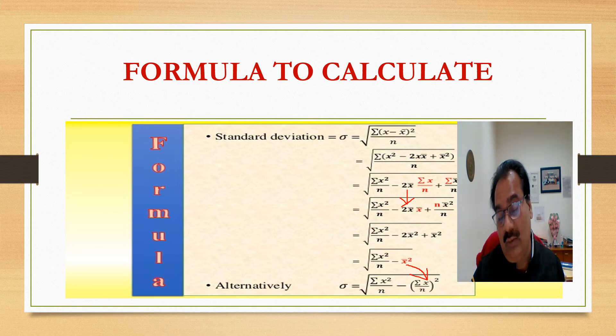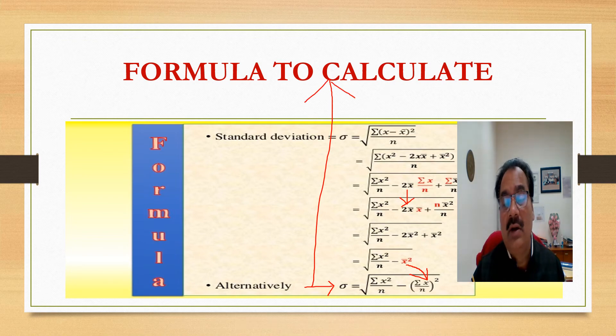So, it means this is a very important formula and very useful: sigma equals under root summation of x square by n minus summation of x by n whole square. You must remember this formula for calculation of standard deviation.